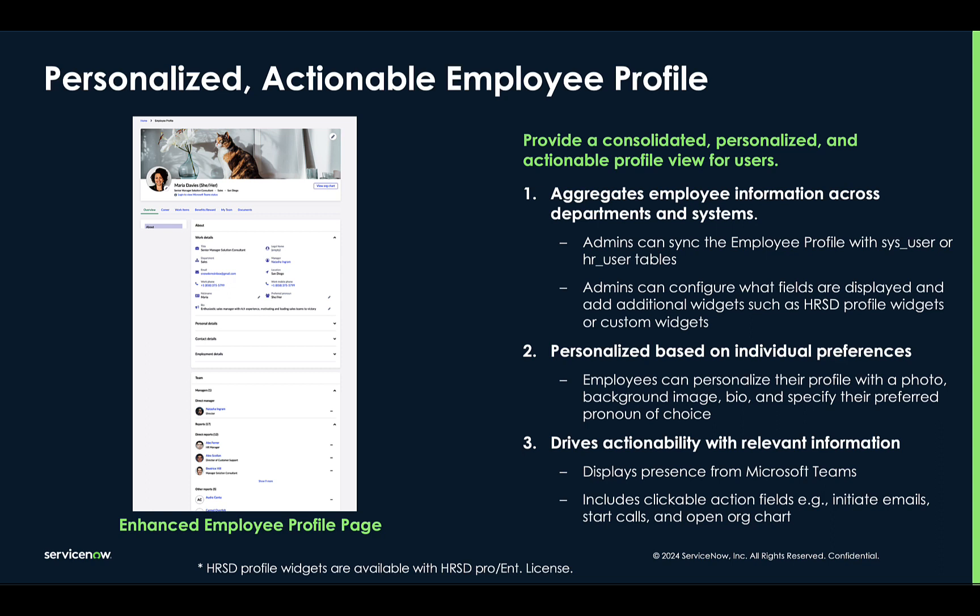It also drives effective peer-to-peer collaboration. Employees can easily access data on their peers when searching, including things like their availability. They can also easily view their peers' manager hierarchy — both direct and indirect — as well as important information such as their contact details or work location.